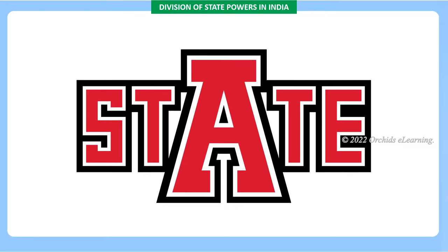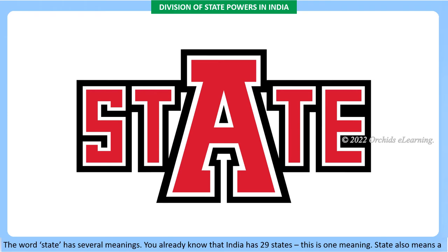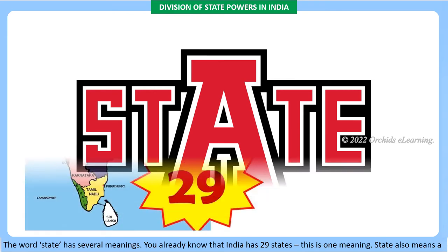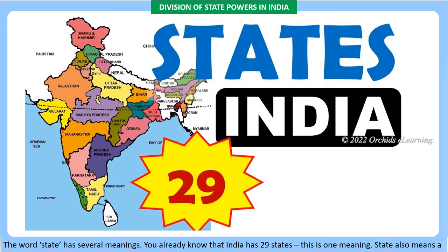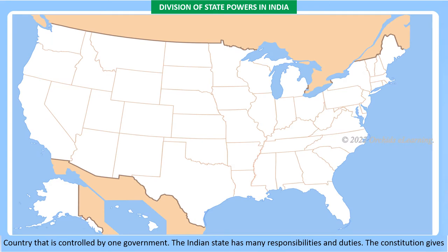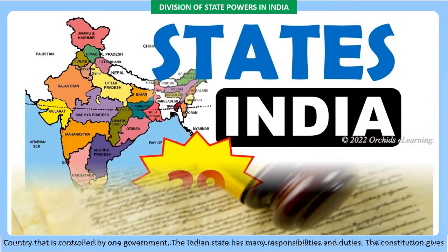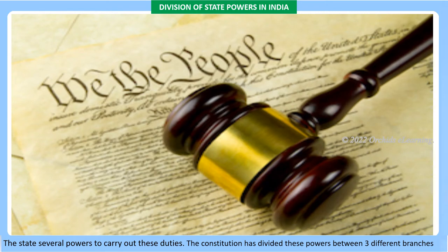Division of state powers in India: the word 'state' has several meanings. You already know that India has 29 states — this is one meaning. 'State' also means a country that is controlled by one government. The Indian state has many responsibilities and duties. The constitution gives the state several powers to carry out these duties.